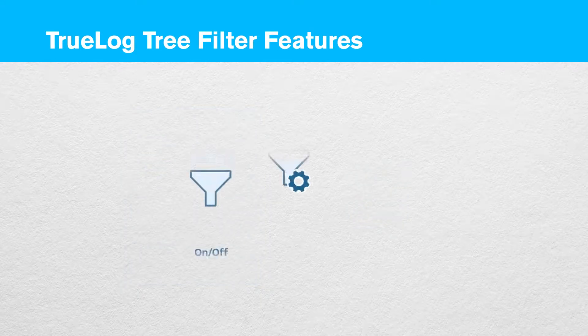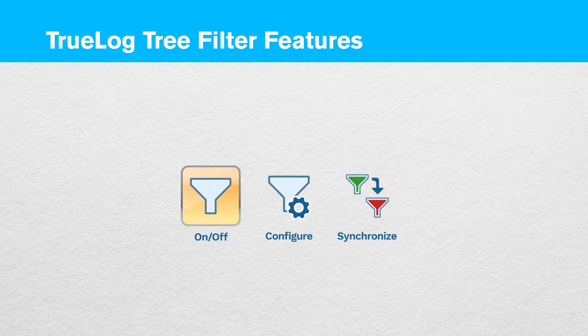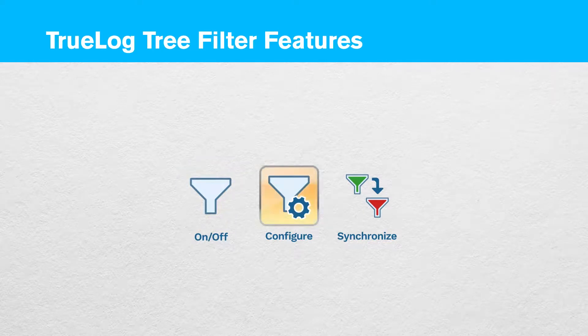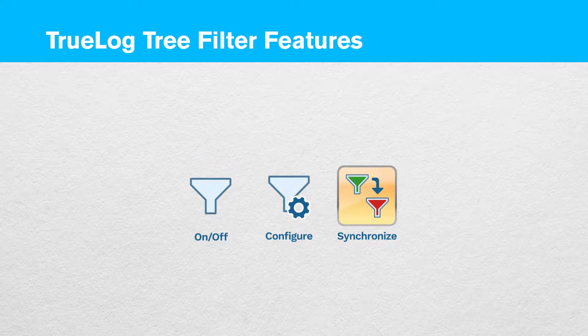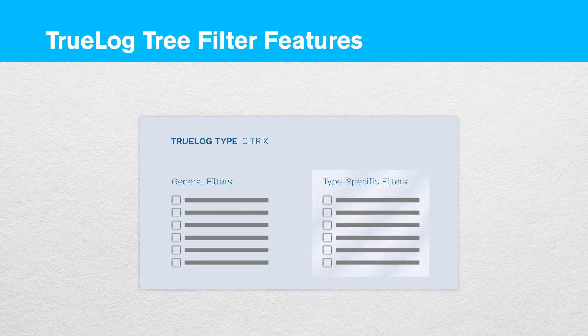The Filter toolbar contains three buttons: an on and off switch, a configure button, and a synchronize button. The filter automatically detects the TrueLock type and provides a broad range of filtering options, split up in general filters and type-specific filters.